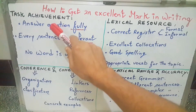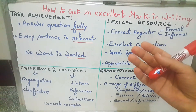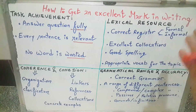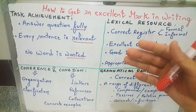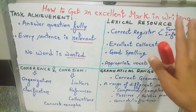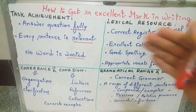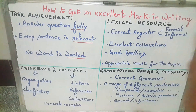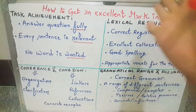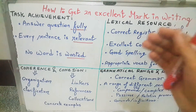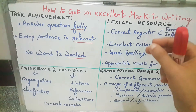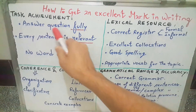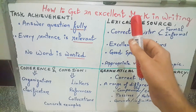The first category is task achievement — this means did you answer the question? I have marked a lot of writings and I noticed that students do not answer the question. They read the question and start talking about something completely different; they digress, they move off the topic, and the result is a low mark. As you are writing your essay, constantly go back to the question and ask yourself: am I answering the question? It's not about what you are interested in or what you know — it's about answering the question fully and directly.